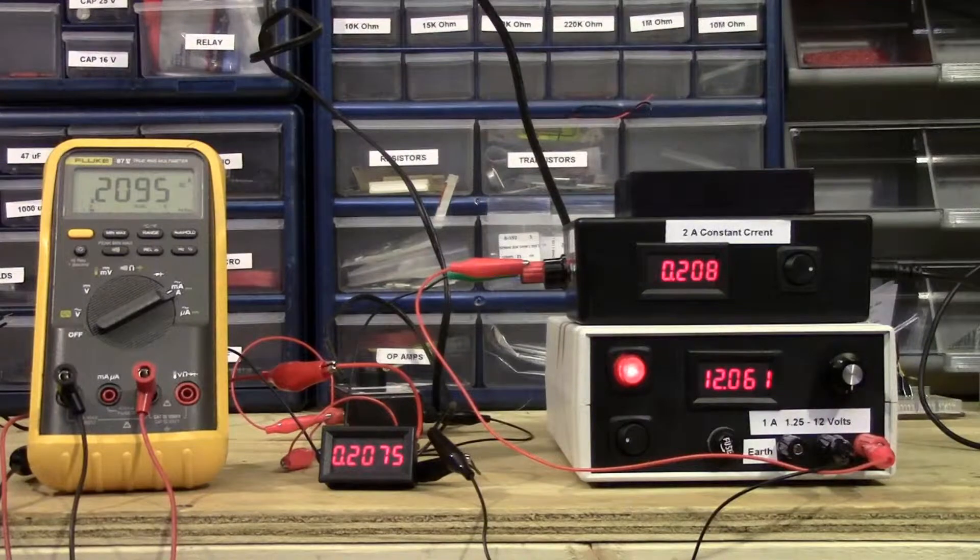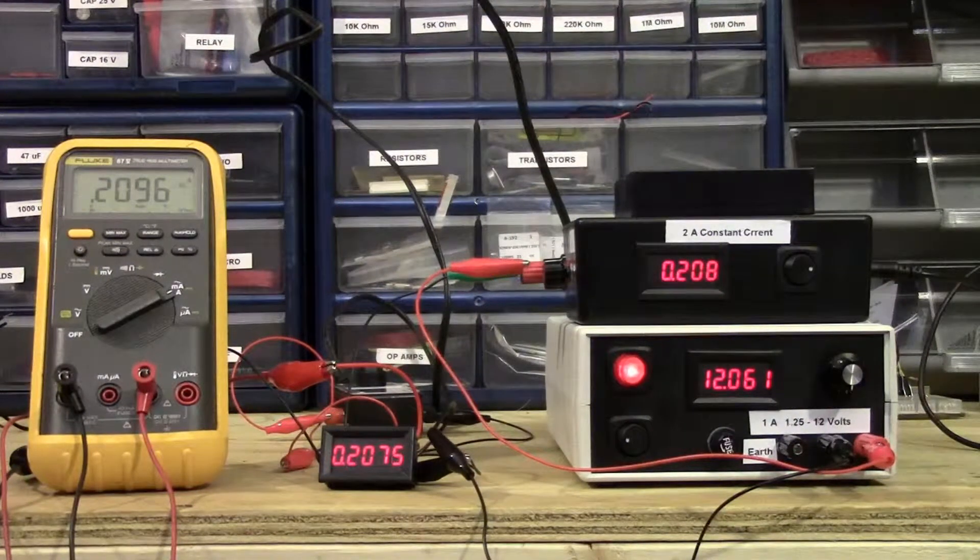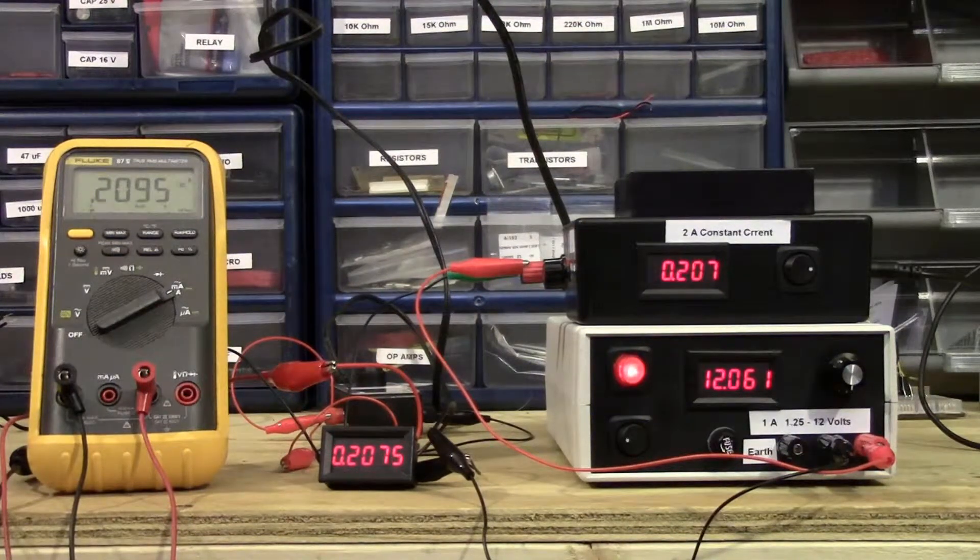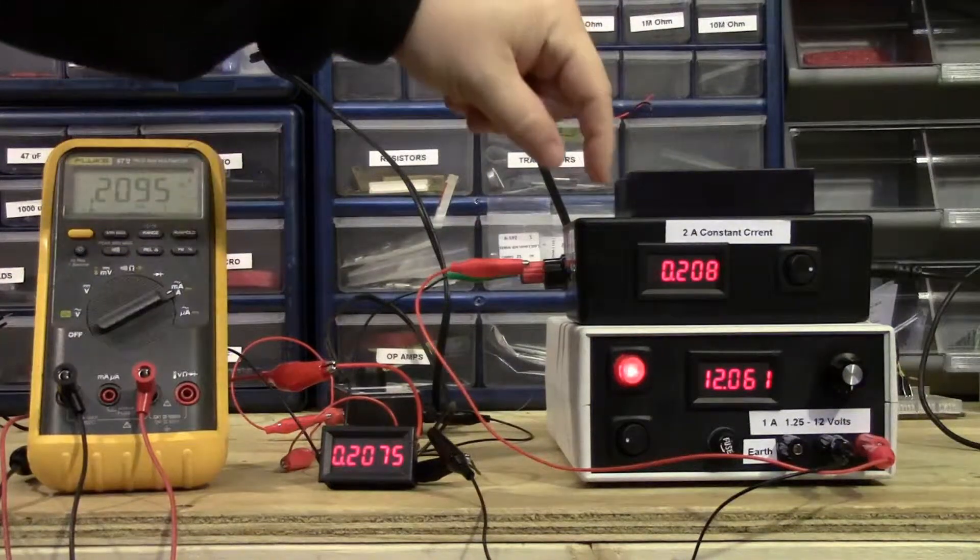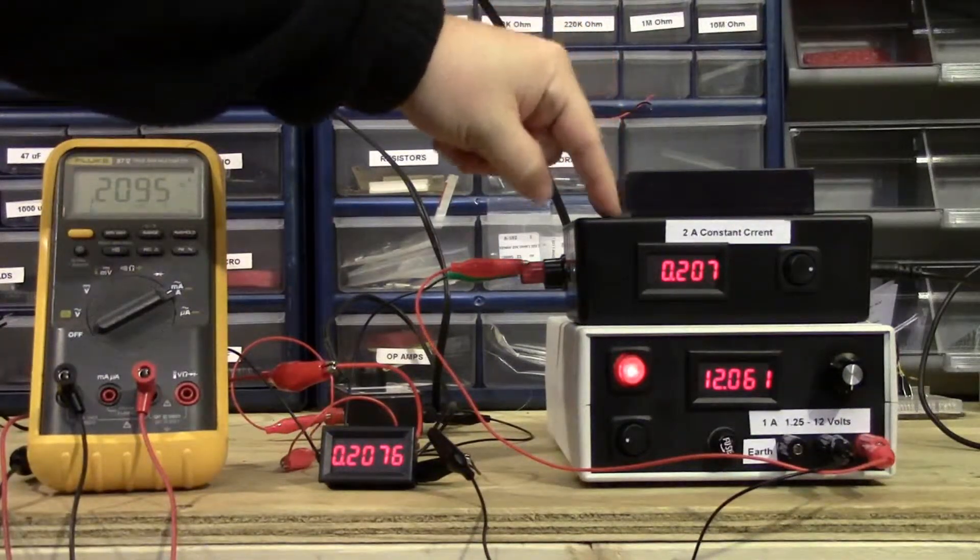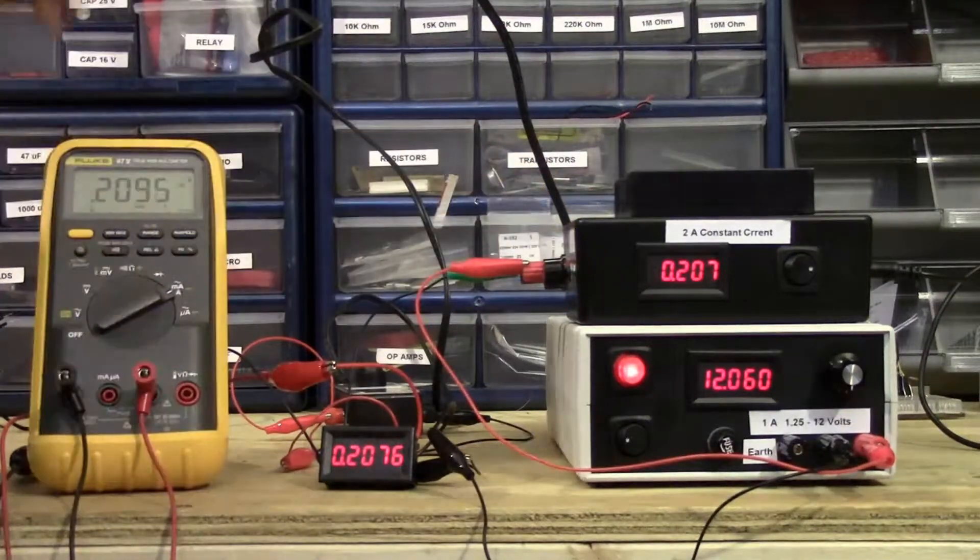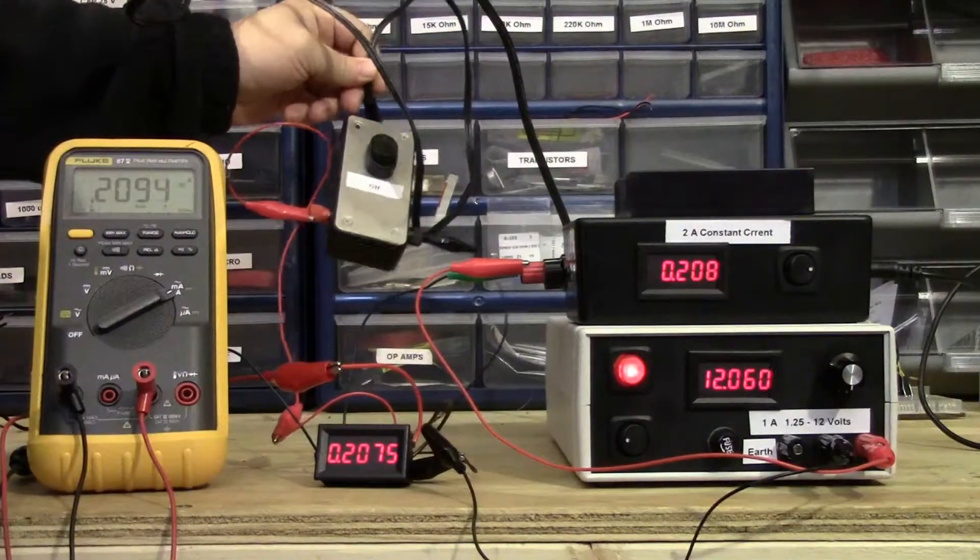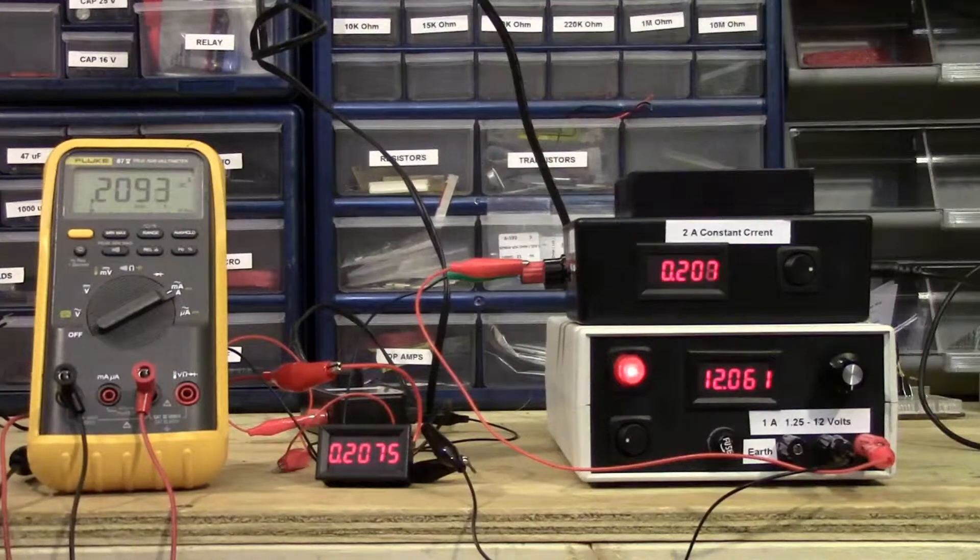One of the things to keep in mind when using these current panel meters is that they require a separate power source than from the device that's being tested. So we want to measure the current, the load from our constant current and our power supply. We need some sort of other device to provide, I believe it's 4 to 30 volts, to power our unit.